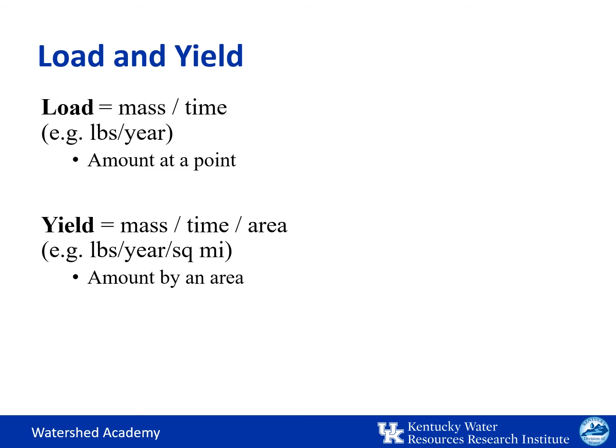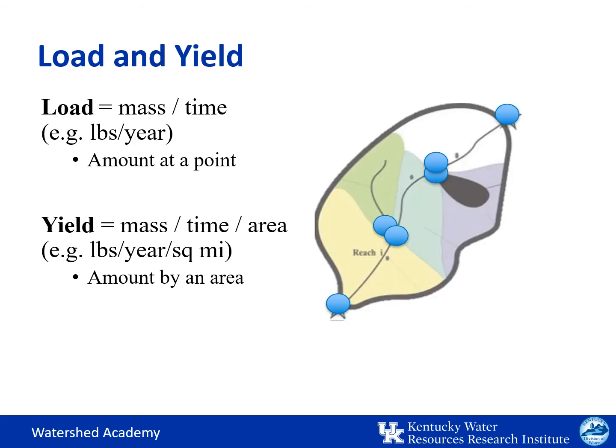Yields are especially important to consider for non-point pollutant sources since they account for land runoff. In this diagram of a watershed, the total load would account for all of the pollutant reaching the most downstream point, and the yield would be calculated by dividing this load by the entire delineated watershed area plus the area flowing into the upstream station. So, loads refer to pollutant measurements at a point and yields to pollutant amounts contributed by a land area.